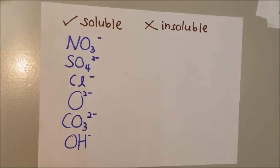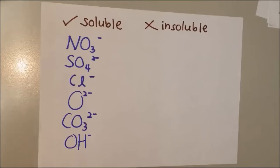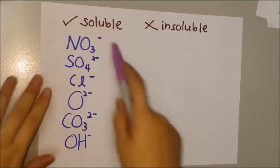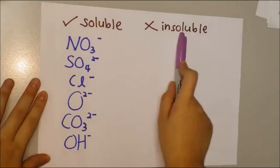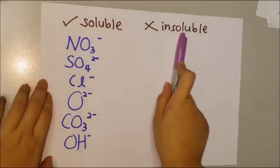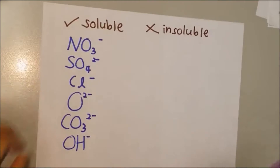Hi everyone, today we are going to talk about Chapter 8: Salt. There are two types of salt — soluble salt and insoluble salt. To prepare a salt, you need to know whether the salt is soluble or insoluble.